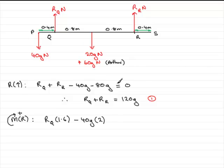Again, this will want to turn about R in an anti-clockwise direction, so it would be negative. And the moment would be the force, 80g, times the distance to R, which would be 0.8. So we've got 80g multiplied by the distance, 0.8.